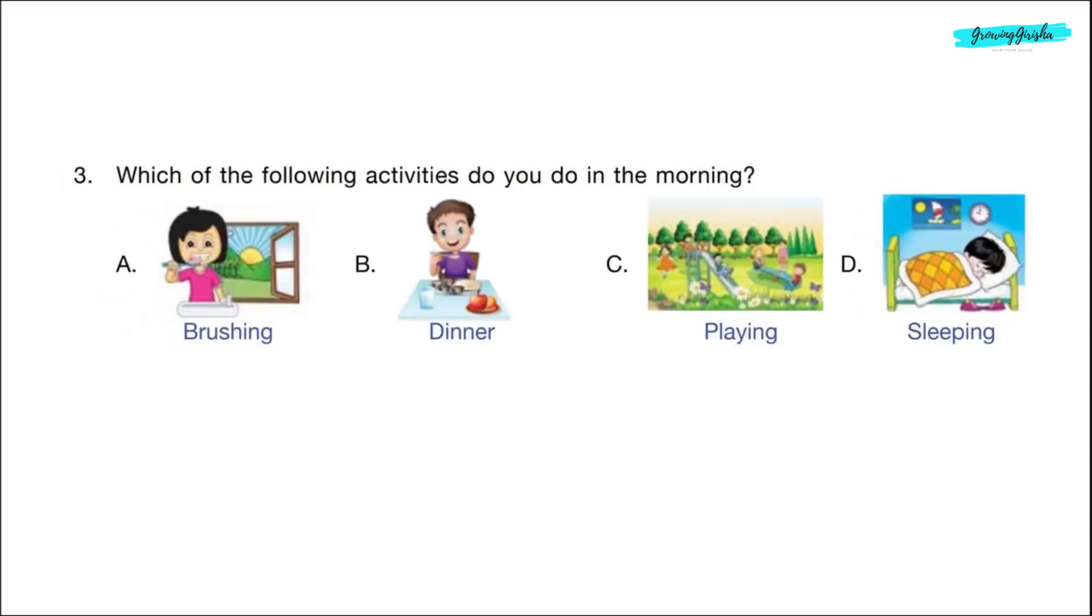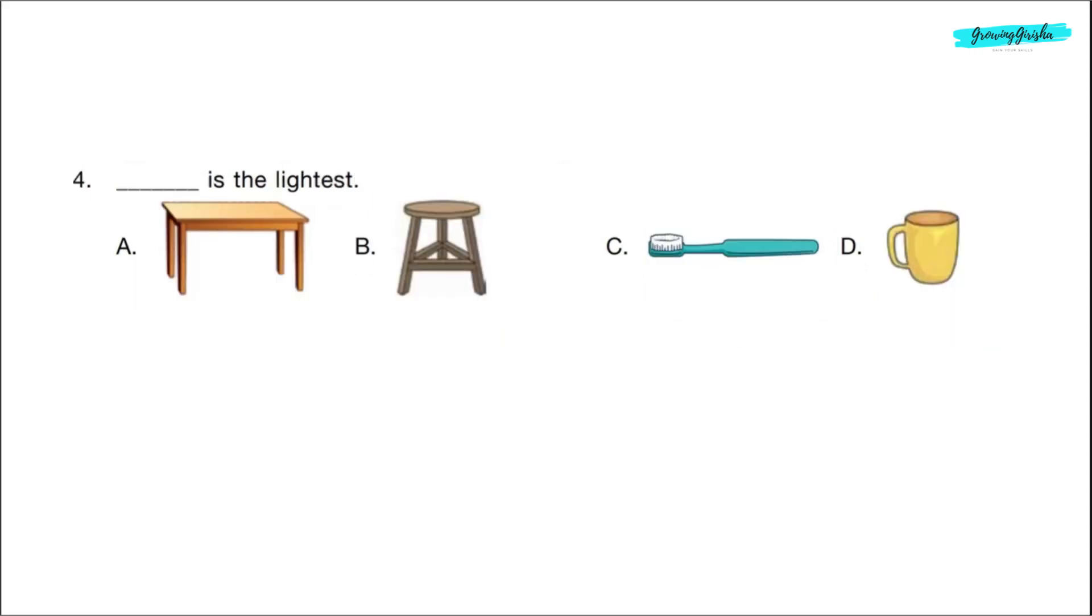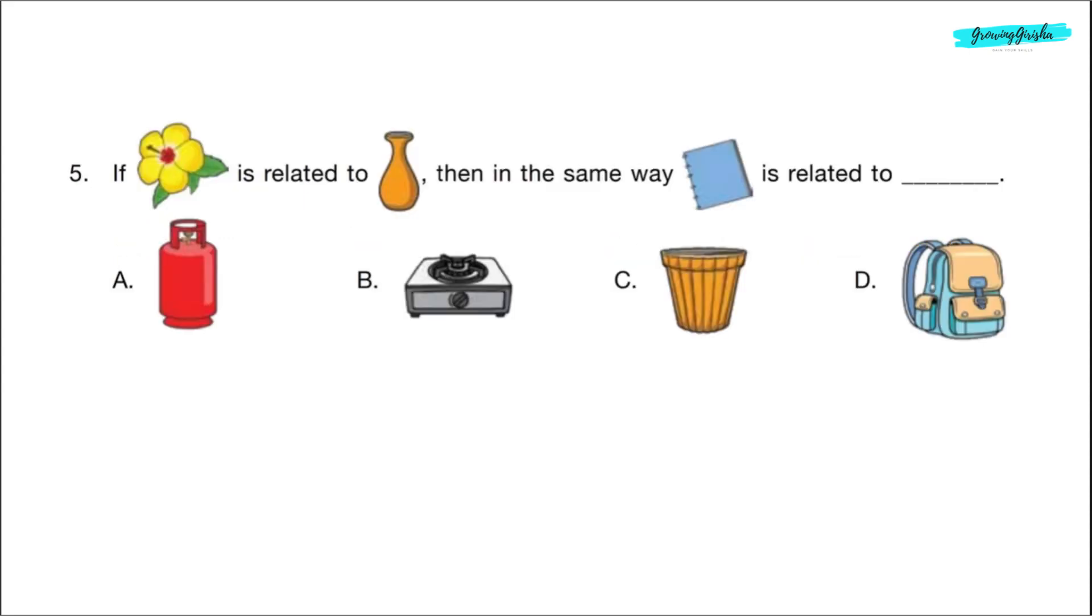Question 3. Which of the following activities do you do in the morning? Correct answer is option A, brushing. Question 4. Dash is the lightest. Among the 4 options, toothbrush is the lightest. Correct answer is option C.